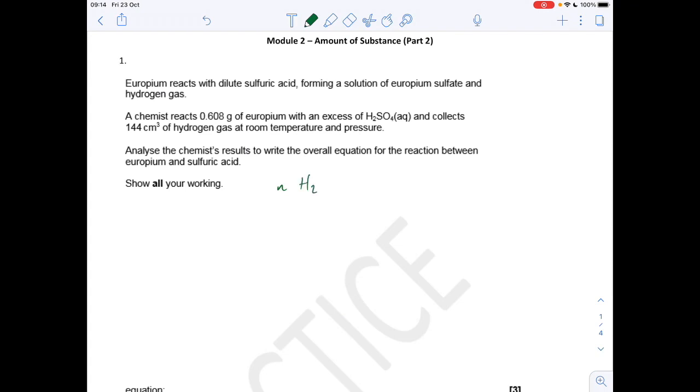Okay so the obvious thing to do first is to calculate the moles of hydrogen and europium. So we can do that with the amounts given. So the moles of hydrogen is the volume 144 over 24,000. So that comes out at 0.006. And the moles of europium mass over mr 0.608 divided by the mr of europium is 152 which is 0.004.